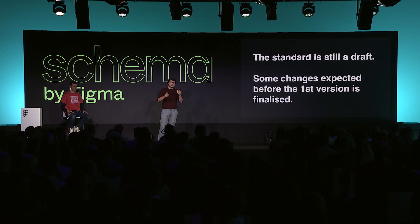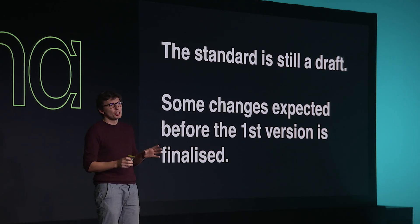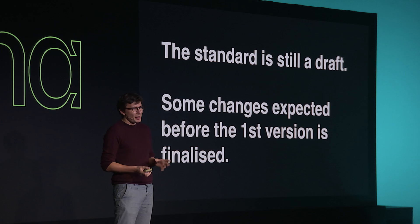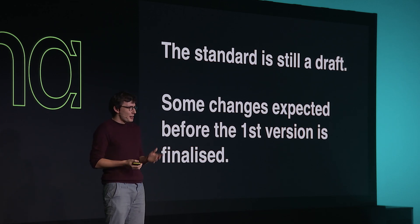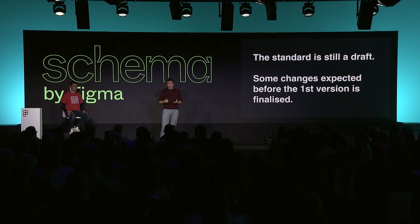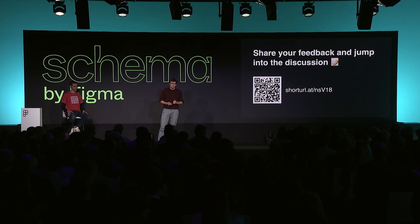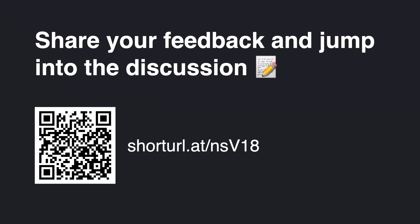This standard is still a draft, and we are still gathering feedback from the community, so you should expect some changes before the first version is released. To help you understand what's behind this format — maybe most of you are familiar with SVG — the DTCG and SVG have this thing in common: you can directly update your tokens in code if you feel comfortable with it, but we expect that many of you will use design tools to update your Design Tokens. We absolutely want your feedback. Please engage with us, participate in the conversation, and help us create the standard that makes sense for everyone.